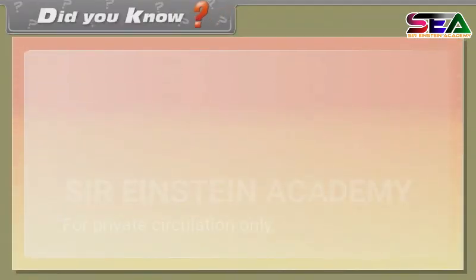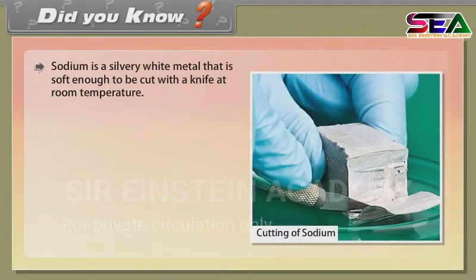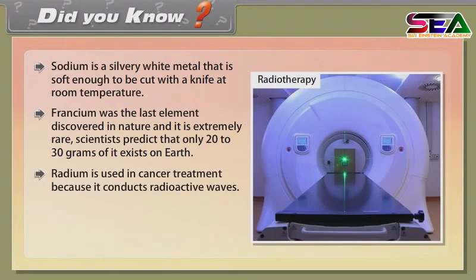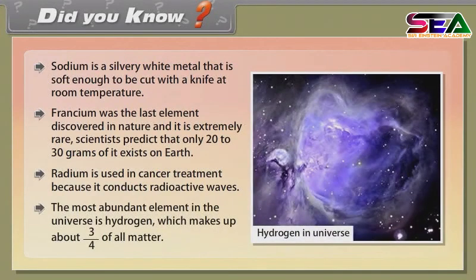Did you know? Sodium is a silvery white metal soft enough to be cut with a knife at room temperature. Francium was the last element discovered in nature and is extremely rare — scientists predict only 20–30 grams of it exist on earth. Radium is used in cancer treatment because it emits radioactive waves. The most abundant element in the universe is hydrogen, which makes up about three-fourths of all matter.